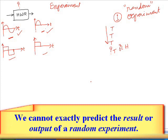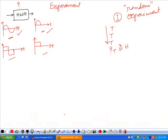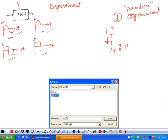The result of the random experiment can be called the outcome. Here, the tail or head can be called the outcome of the random experiment. So we define what is a random experiment and what is an outcome — the output of the random experiment is called the outcome. We will continue in the next class and look at some more definitions.